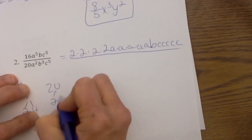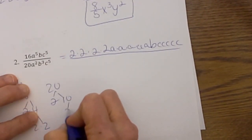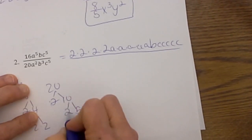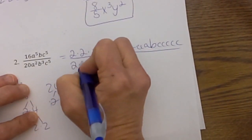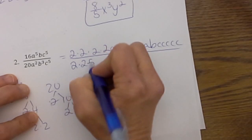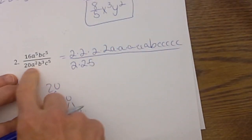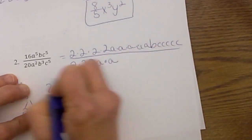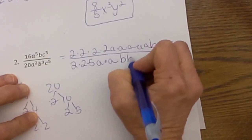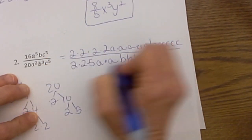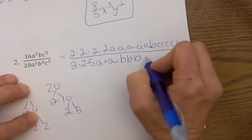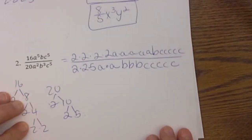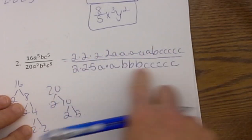Now let's take our denominator. We have 20. 20 is 2 times 10, and 10 is 2 times 5, so I have 2 times 2 times 5 in the denominator. Let's write out our factors for a squared: that is a times a. b cubed is b times b times b. And c to the 5th is c, c, c, c, c, c. Ok, now we've got all of our factors written out.